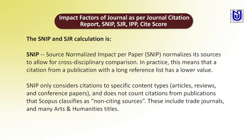SNIP — Source Normalized Impact Per Paper — normalizes its sources to allow for cross-disciplinary comparison. In practice, this means that a citation from a publication with a long reference list has a lower value. SNIP only considers citations to specific content types: articles, reviews, and conference papers, and does not count citations from publications that Scopus classifies as non-citing sources.